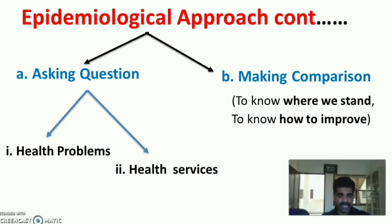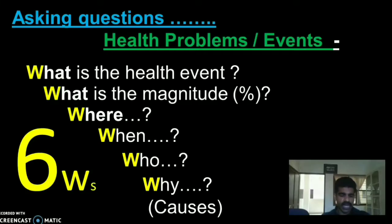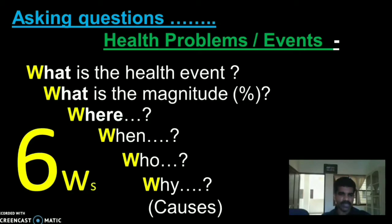The epidemiological approach includes asking questions and making comparisons — asking questions related to health problems in their areas and about health services available in the community. Making comparisons helps to know where the community stands and how to improve situations. Health problems or events can be explored using six W's: what is the health event, what is its magnitude, where did it occur, when did it occur, who were affected, and why did it happen.